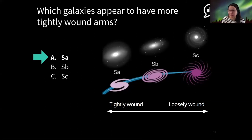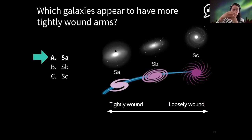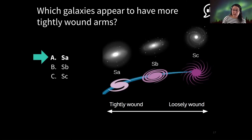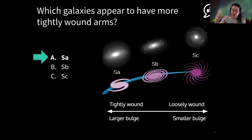When we look at the SC type, the arms are fairly distant from one another. With SB, they're tighter. And then with SA, you can hardly even see the arms in this particular image — they're so tightly wound they're almost indistinguishable. That's how spirals are subclassified: by the tightness of the arm winding. If that's hard to figure out from the image, you can also look at the bulge size. SA galaxies have the largest bulge compared to their overall size, while SC galaxies have smaller bulges.